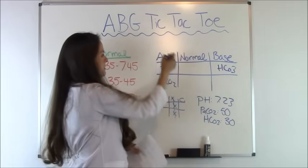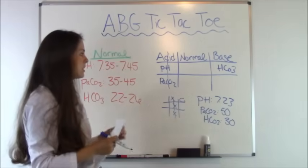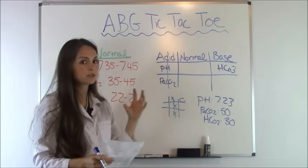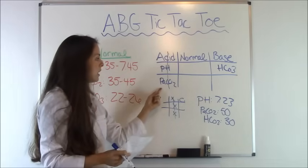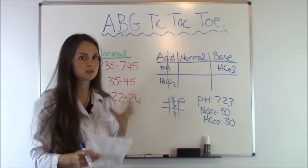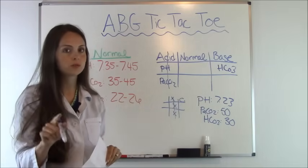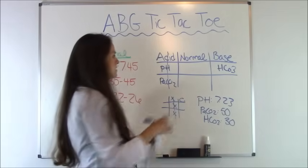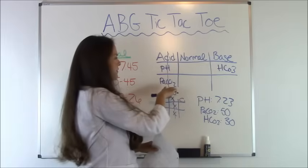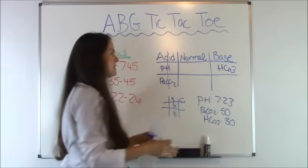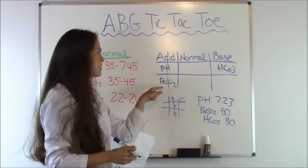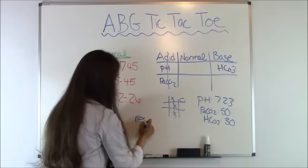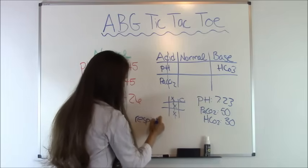Now we already have our tic-tac-toe. Looking at this, you know that this patient, because we have three in a row, this is where you're going to interpret if it's respiratory or metabolic. PaCO2, what does it represent? Respiratory. So we know that we have a respiratory issue. Now, for instance, if these two values were switched, say HCO3 was over here and PaCO2 was under base, because we got the cross underneath here, that would be a metabolic problem instead of a respiratory problem. So we have a respiratory problem.